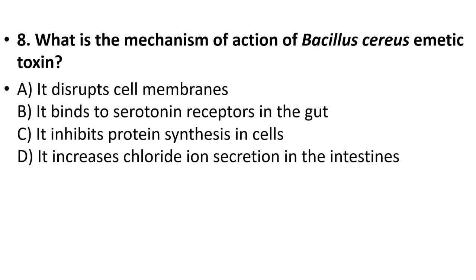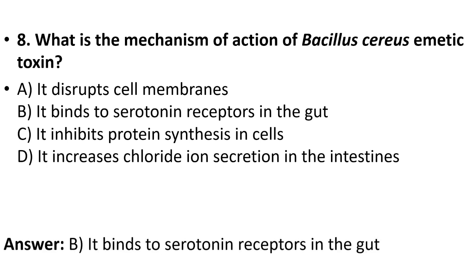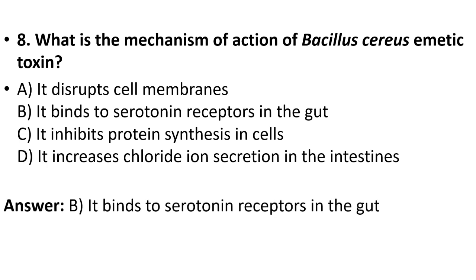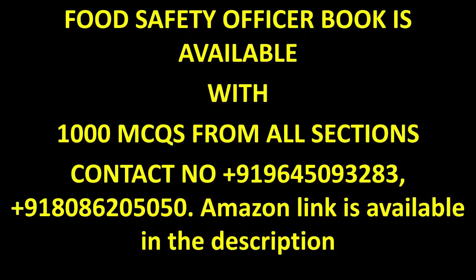Eighth question: What is the mechanism of action of Bacillus cereus emetic toxin? Options: it disrupts cell membranes, it binds to serotonin receptors in the gut, it inhibits protein synthesis in cells, or it increases chloride ion secretion in the intestines. The answer is option B, it binds to serotonin receptors in the gut.